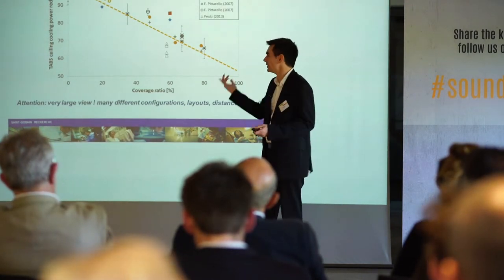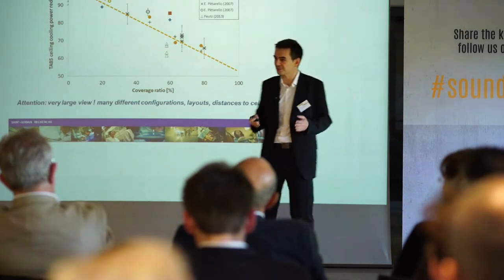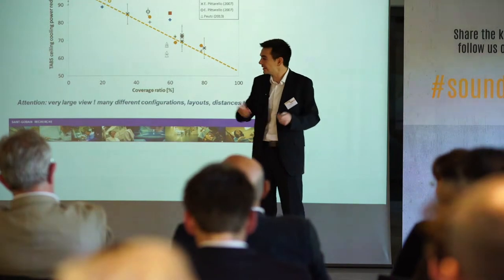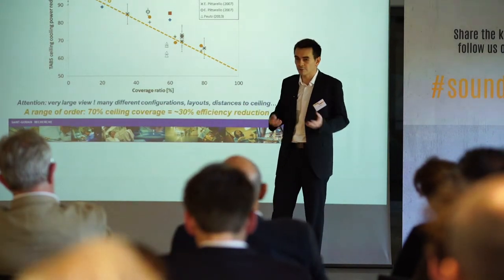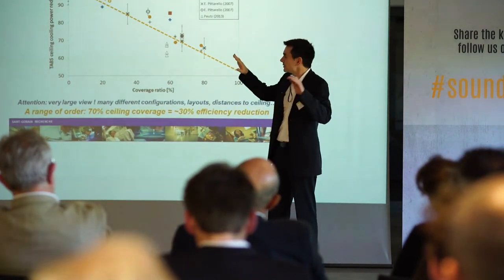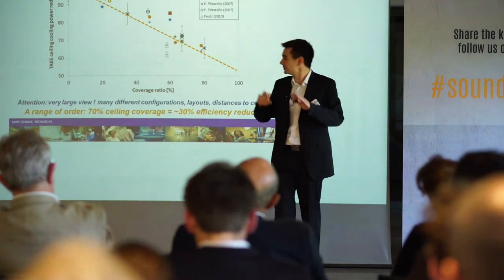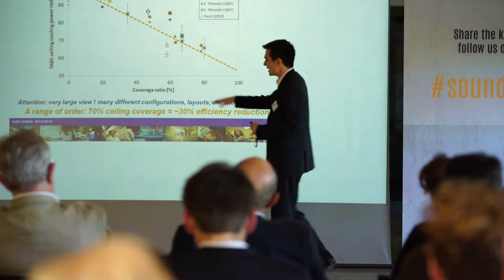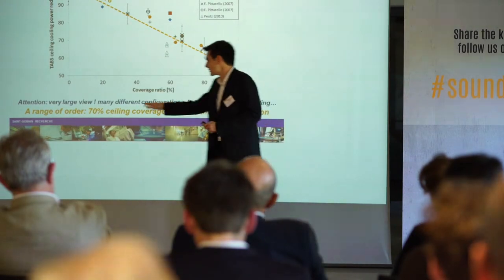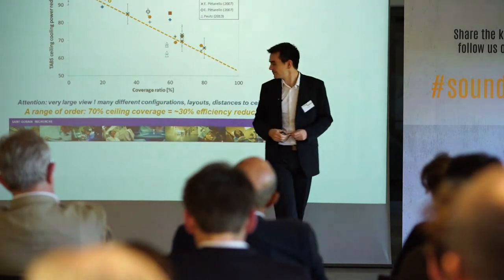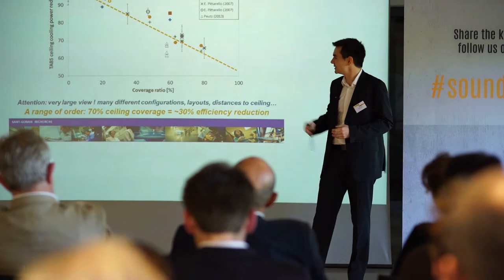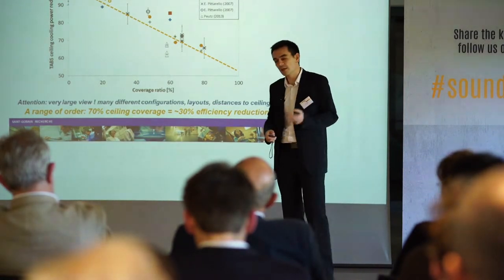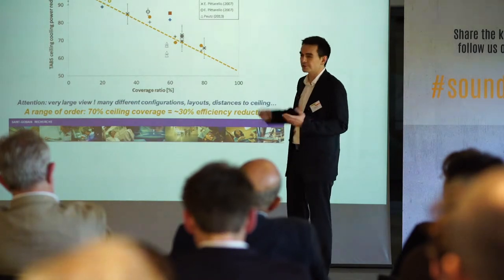Just to remind you, a very good value of such a coefficient is 0.99, for example. But here we have a very broad view. Just to give an order of magnitude, comparing all configurations and all experiments on the same graph, we can see that if we cover 70% of the ceiling, we reduce the efficiency of the TABS cooling by around 30%. That's useful information, but here it's just the efficiency.